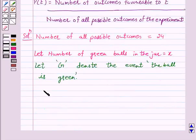Therefore probability of a green ball, that is P(G), is equal to number of outcomes favorable to G upon total number of all possible outcomes. So this is equal to x upon 24. Let us take this as number 1.